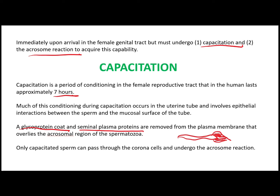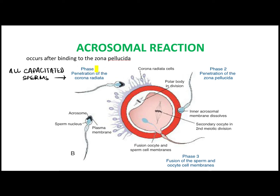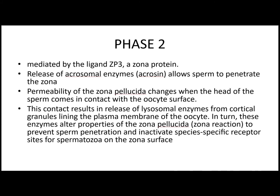Sperms then undergo the acrosomal reaction, which occurs after binding of sperms to the zona pellucida. The acrosomal reaction has three phases. In phase one, sperms penetrate the corona radiata — all capacitated sperms have the ability to undergo phase one. In phase two, sperms penetrate the zona pellucida; acrosomal enzymes such as acrosin are released, allowing penetration. In phase three, sperms fuse with the oocyte cell membrane.